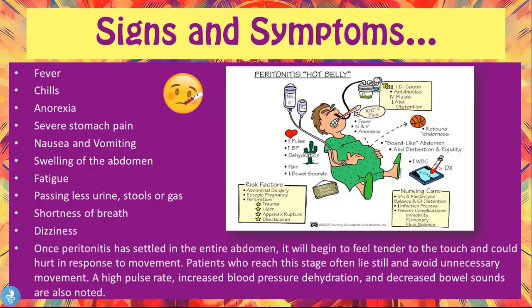The signs and symptoms of a gastrointestinal perforation include fever, chills, anorexia, severe abdominal pain, nausea and vomiting, swelling of the abdomen, fatigue, passing of less urine, stools or gas, shortness of breath, and dizziness. Once peritonitis has settled in, the entire abdomen will begin to feel tender to the touch and could hurt in response to movement. Patients who reach this stage often lie still and avoid unnecessary movement. A high pulse rate, increased blood pressure, dehydration, and decreased bowel sounds are also noted.